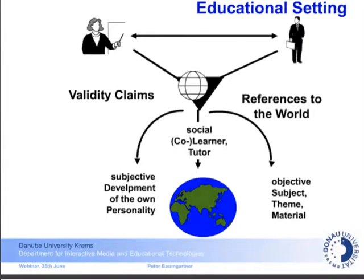The co-learner is not only students with me — in a constructive setting, the co-learner could also be the teacher, or people I would like to involve in learning. And then we have the subjective aspect: filling up my knowledge and competences so that I develop my own personality. So we have subjective, social, and objective validity claims in learning as well.